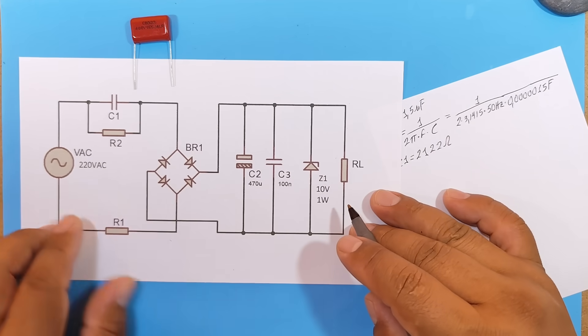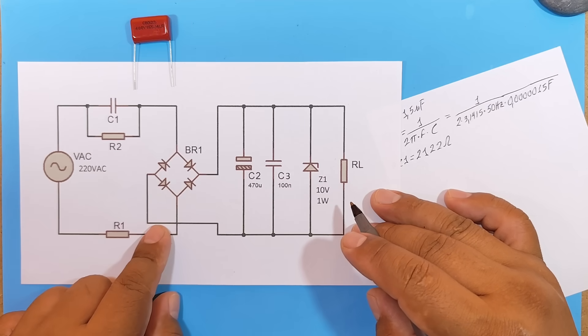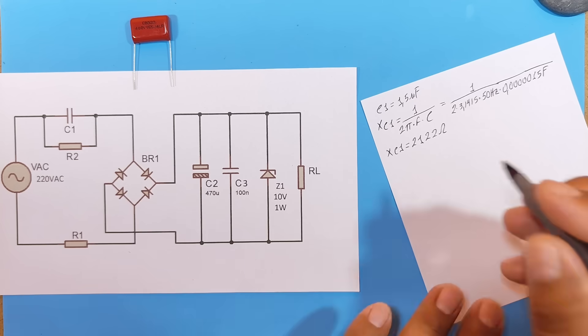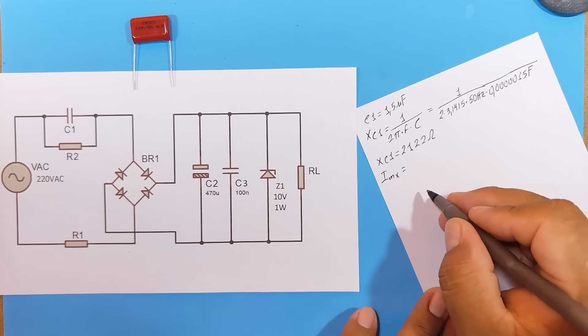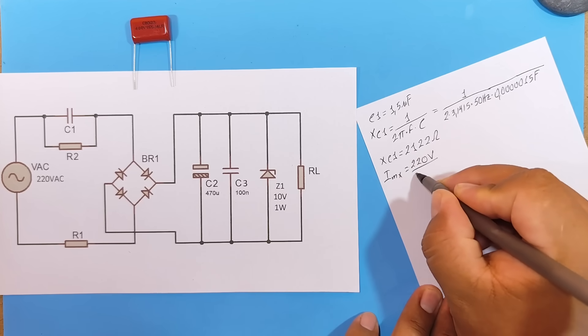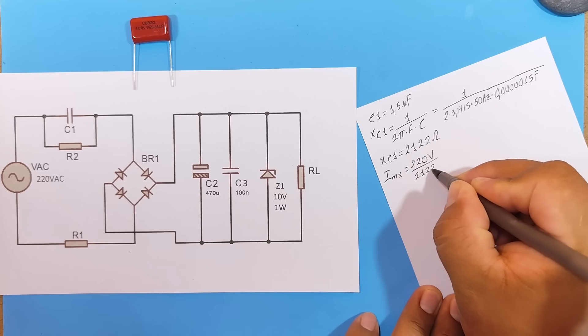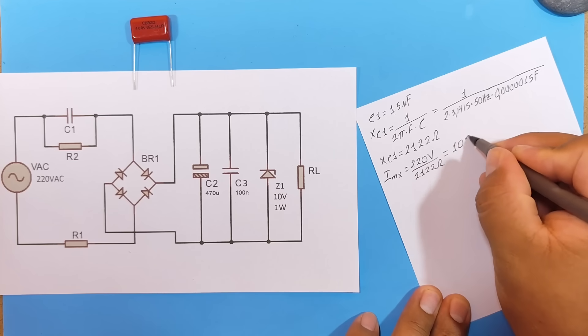Now, if we use a voltage of 220 volts, we can calculate the current we are going to obtain. Therefore, the maximum current we can obtain would be equal to 220 volts divided by 2,122 ohms. And the maximum current would be 102 milliamps.